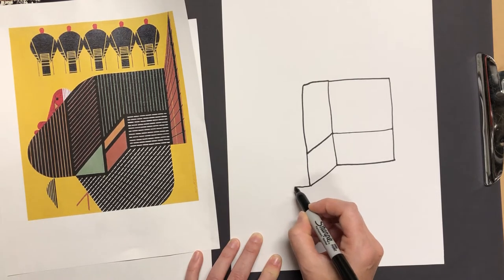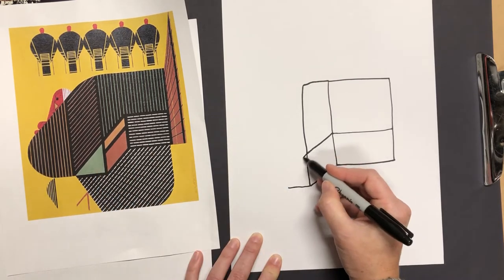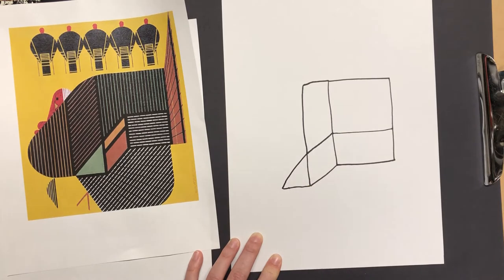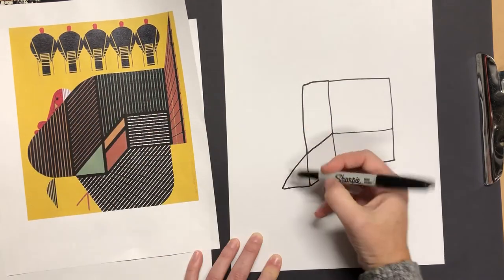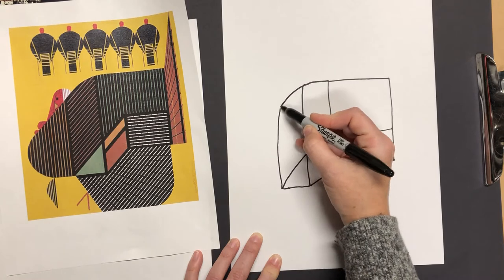Now let's add in our triangle right here. And let's do this shape here. We're going to come up and then we're going to curve.